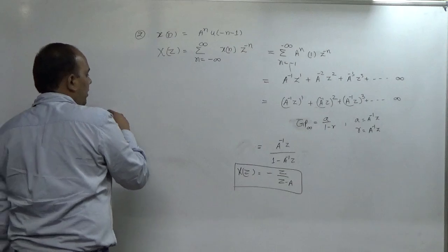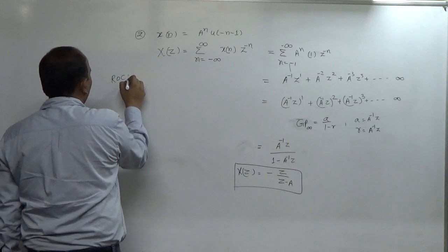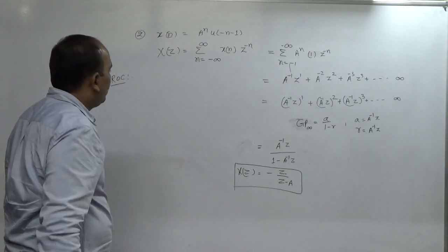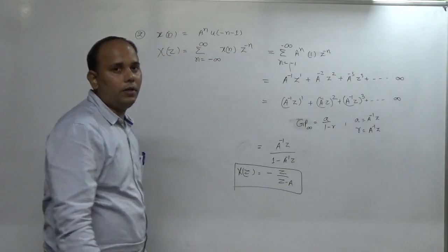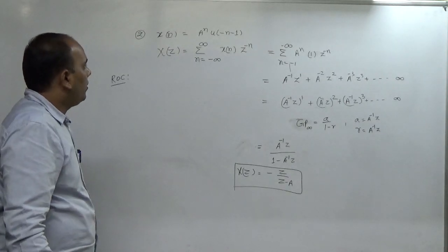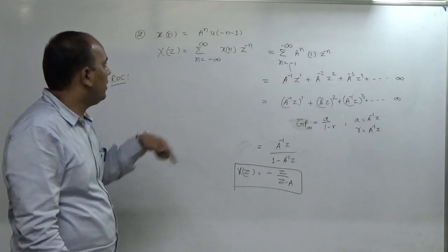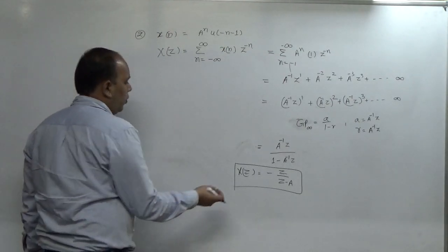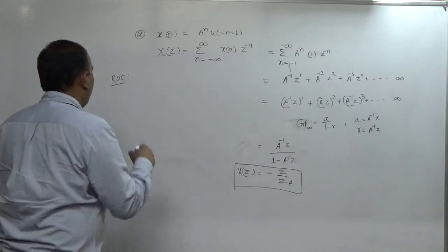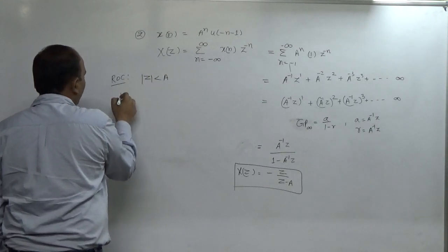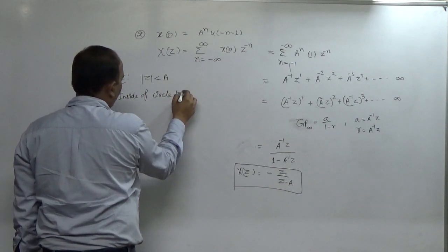Now we determine the Region of Convergence (ROC). Just like the Laplace transform, the ROC of the system is totally dependent on u(n) or u(-n-1). For u(n) — right-sided signals — we take the ROC outside the circle, and for u(-n-1) — left-sided signals — we take the ROC inside the circle. The pole of this function is at z = a, so the ROC lies inside the circle, meaning |z| < |a|.